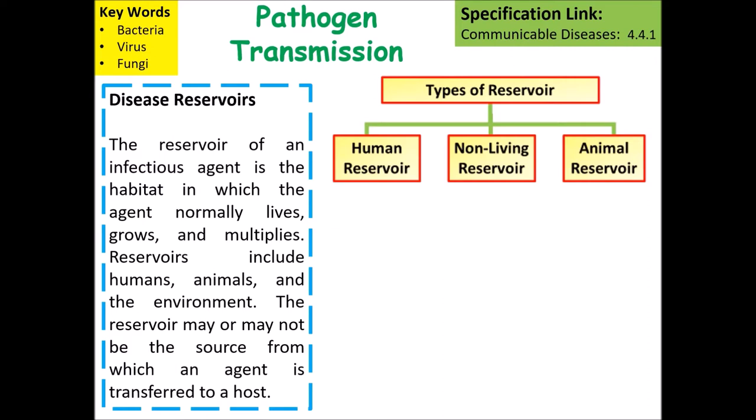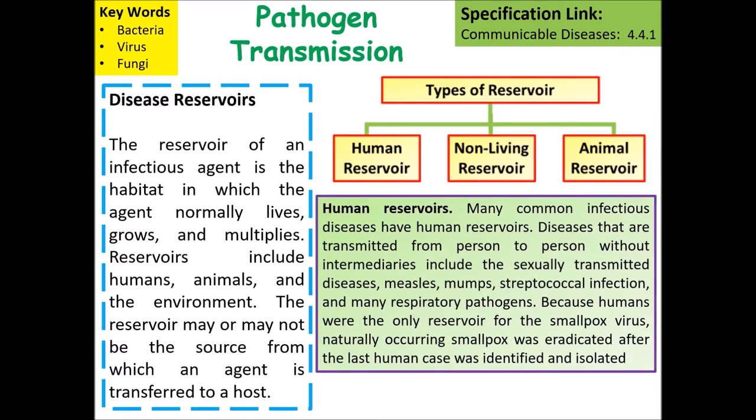Many common infectious diseases have human reservoirs — diseases transmitted from person to person without intermediates, such as sexually transmitted diseases, measles, mumps, streptococcal infections and many other pathogens that pass between humans.